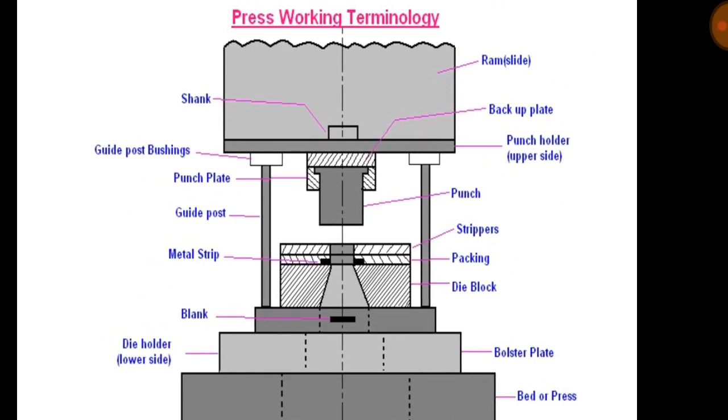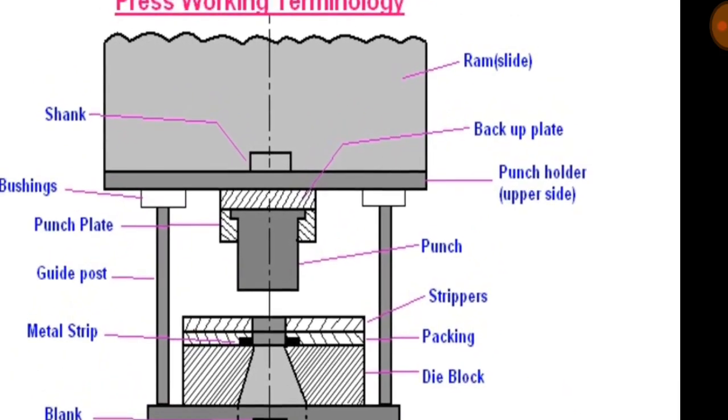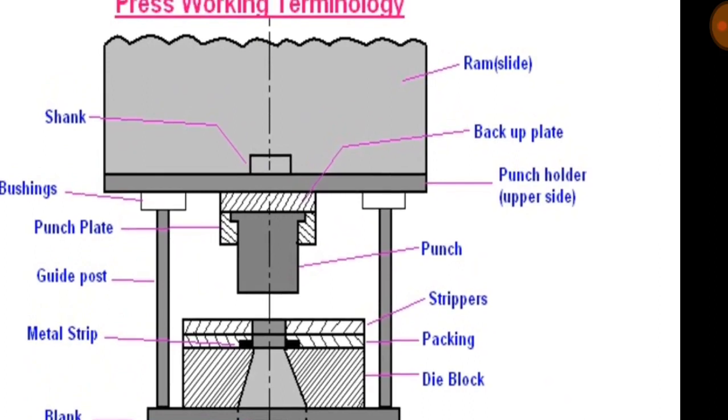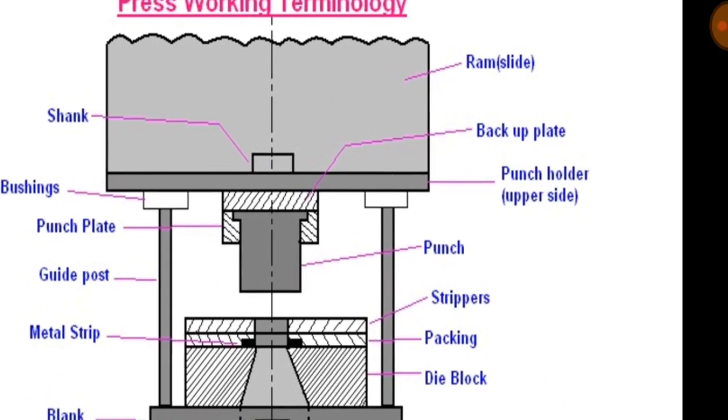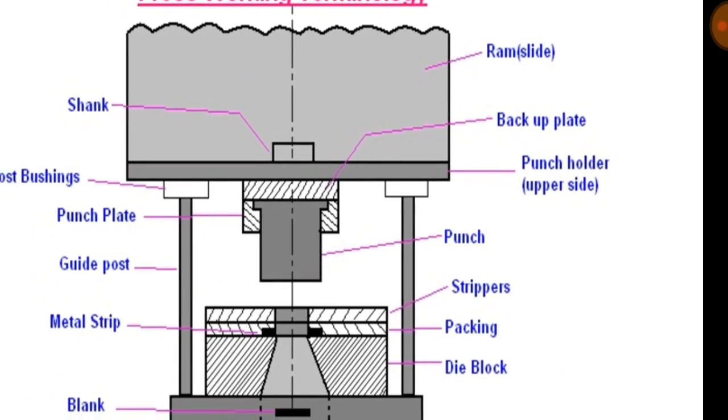Backup plate: the backup plate or the pressure plate is placed so that the intensity of the pressure does not become excessive on punch holder. The plate distributes the pressure over a wide area and the intensity of pressure on punch holder is reduced to avoid crushing.